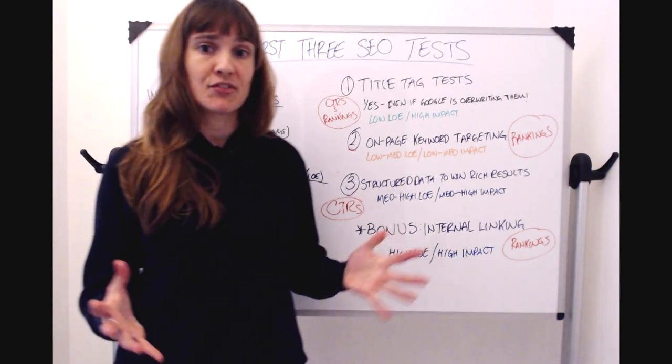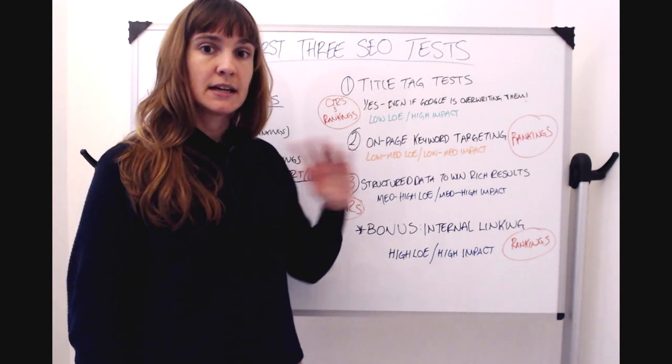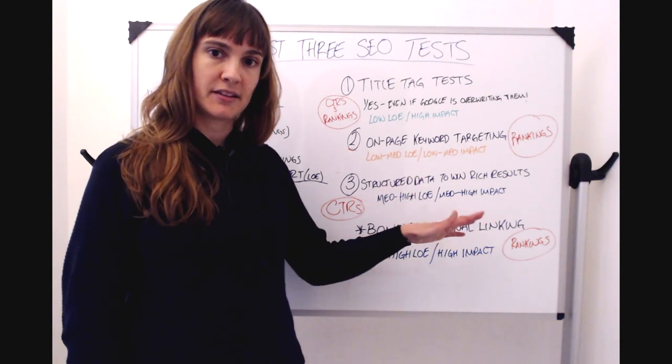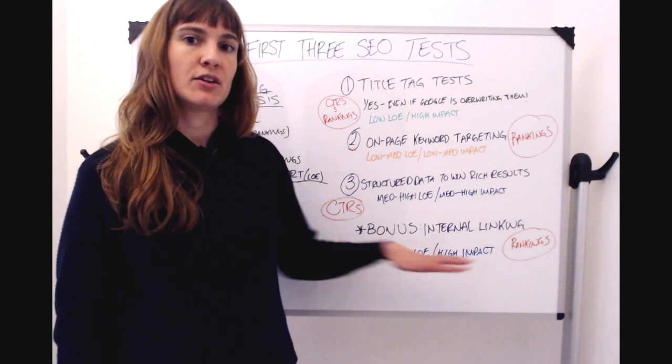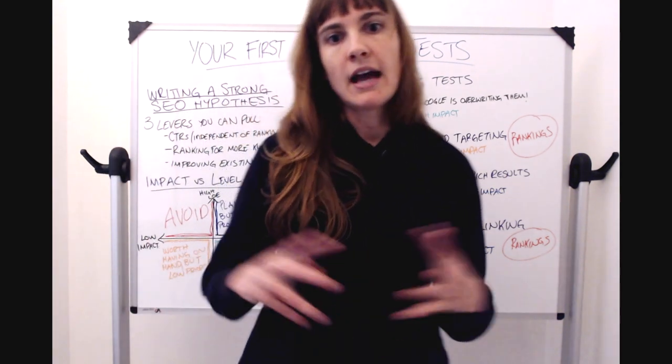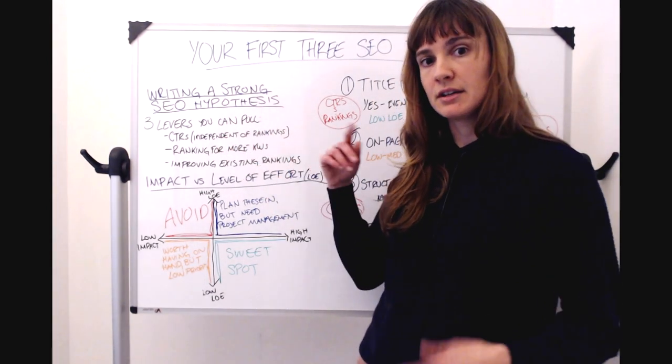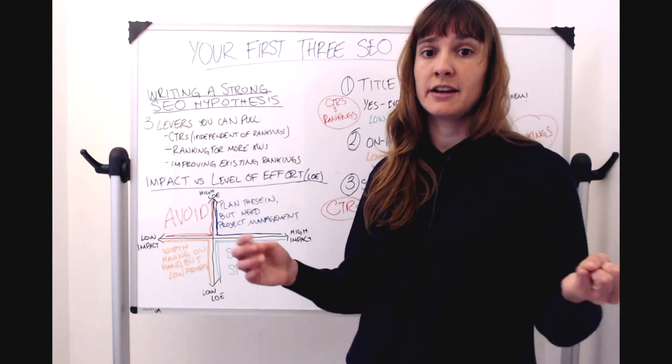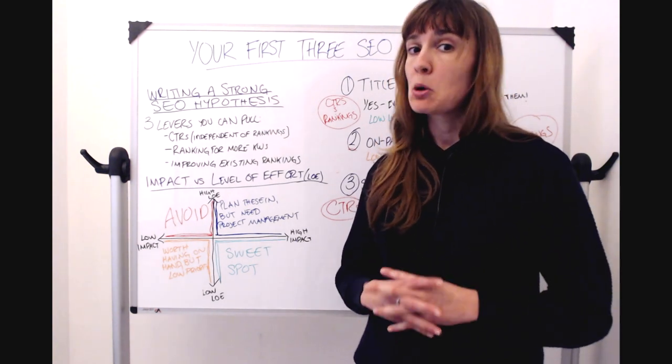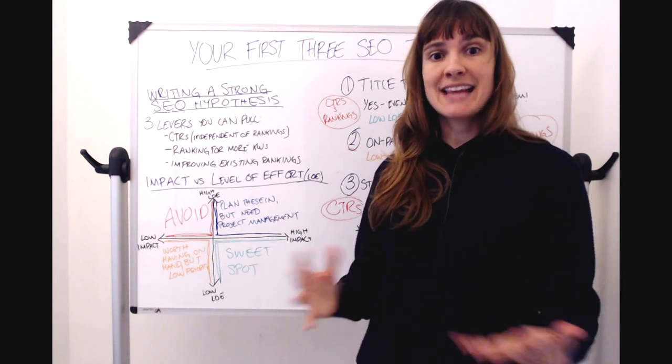So that's what I have for you today. Again, your first three SEO tests to run, title tag tests, improving your keyword targeting on the page, and adding structured data to win rankings. As a bonus, plan in those internal linking tests, but it's going to involve a lot of different teams to probably get this done. And then remember, if you're not coming back to one of these three core levers, if you're not improving either click-through rates, independent of rankings, ranking for more keywords, or improving your existing rankings, probably not an SEO test. That's all I have for you today. Thanks Moz!